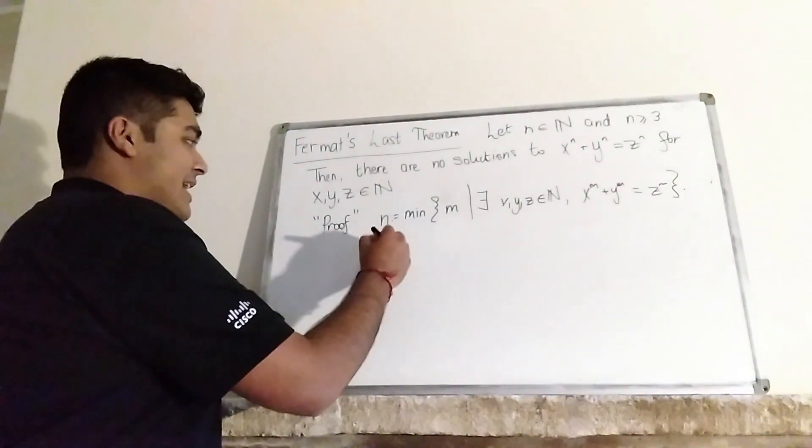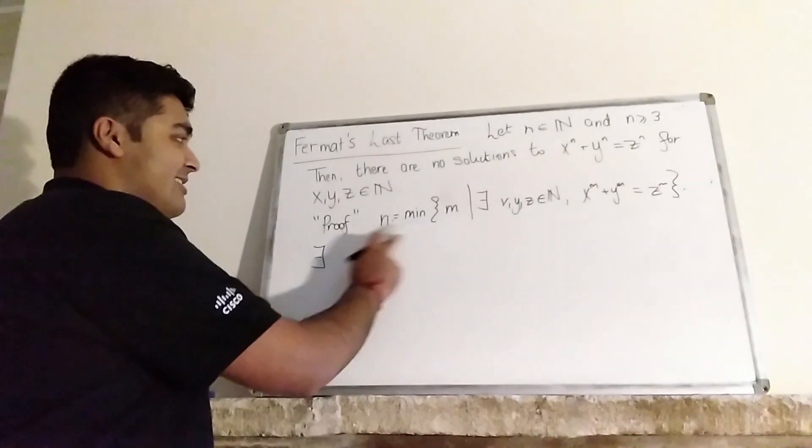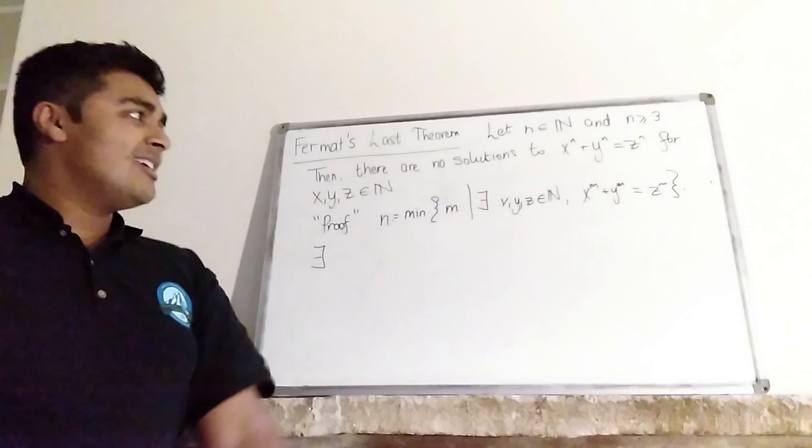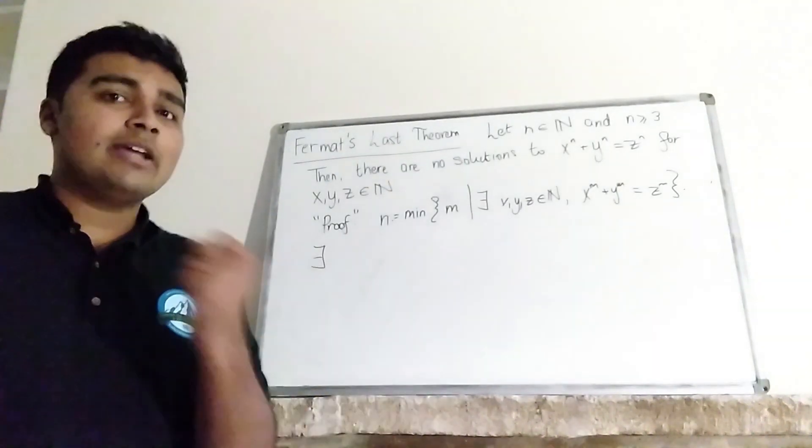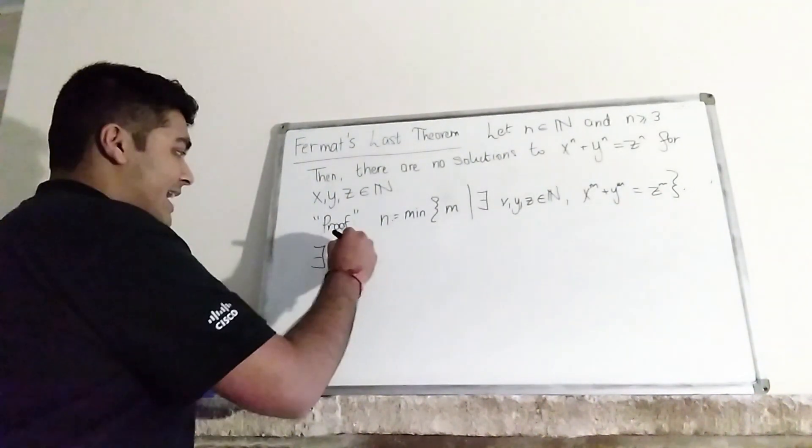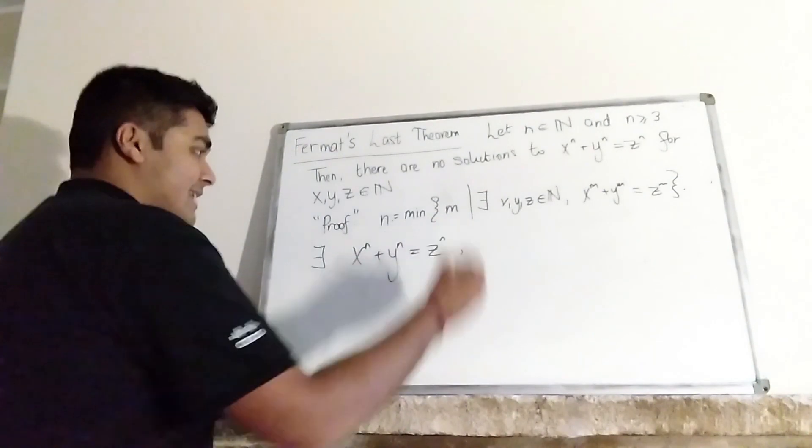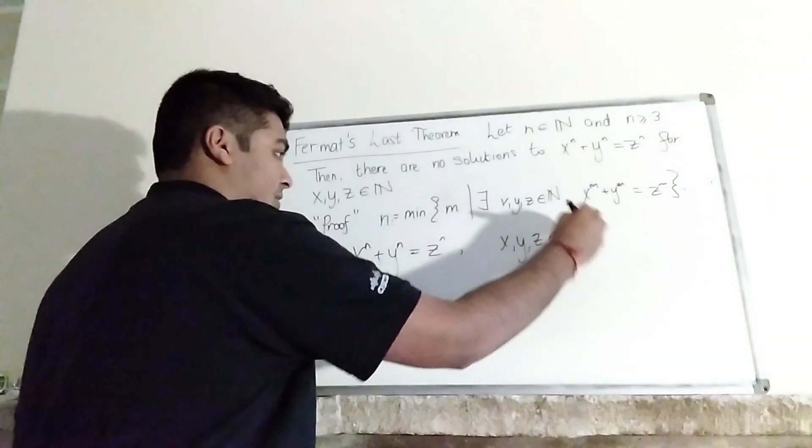Now, because this is a discrete set, the minimum is indeed in this set, or if I called this thing the infimum it would be in this set. So in other words there are indeed x, y, and z in the natural numbers such that x^n + y^n = z^n with x, y, and z in the natural numbers.